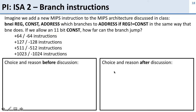Let's say we add a new instruction to MIPS — branch not equal immediate. It's going to take a register, constant, and an address. What it's going to do is branch to the address if the register does not equal the constant. If we allocate 11 bits for the constant, how far can the branch jump?